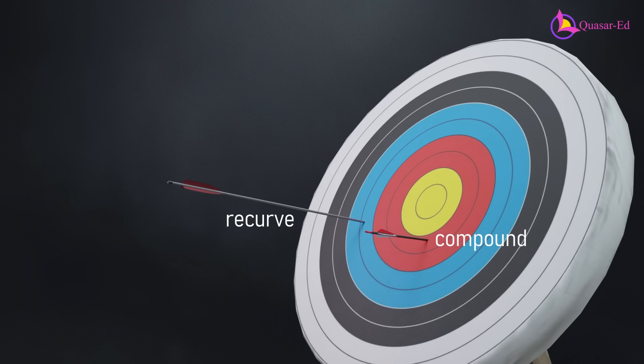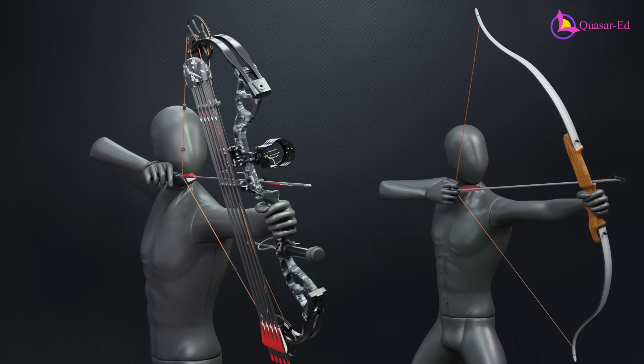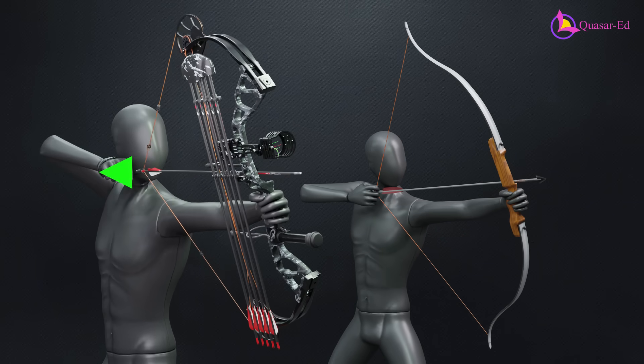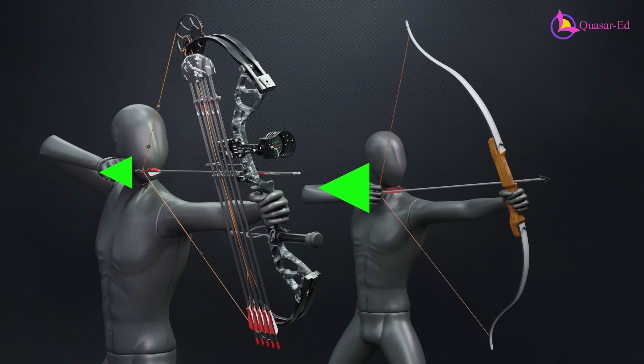And here's something interesting. Just before releasing the arrow, an archer using a compound bow needs far less effort to maintain full draw than an archer with a recurve bow. Let's understand why.